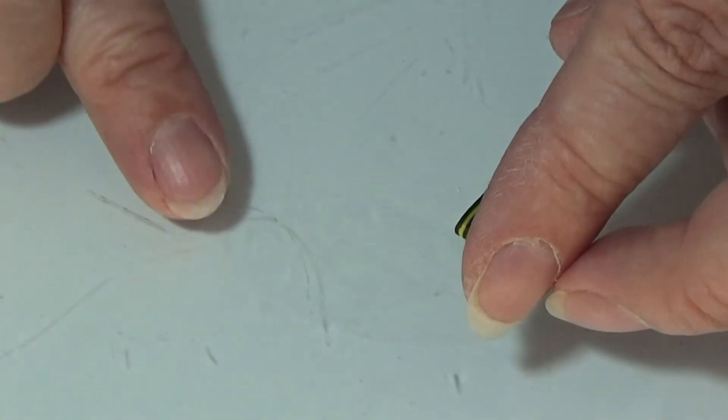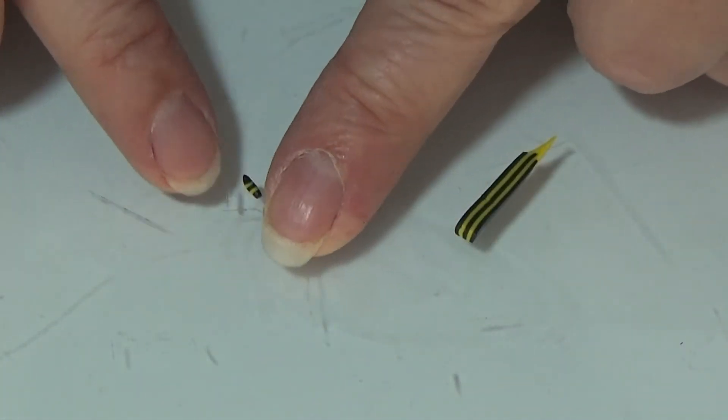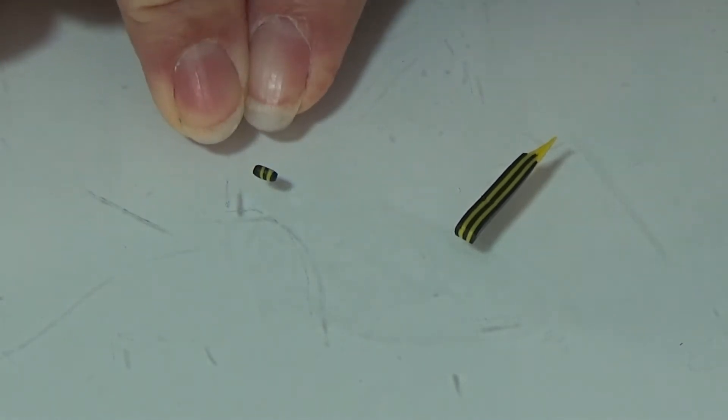See if I can show you. I get this little bumble bee body and that's how I make the body for the bumble bee. I'm going to make a bunch of these, bake them, and then I will be back.